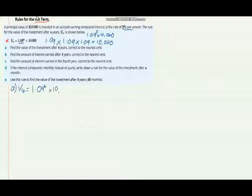So we're looking for V4, and that will be equal to 1.09 to the power of 4 times 10,000. Pop that into your calculator and we get the value of $14,115.82 to the nearest cent.